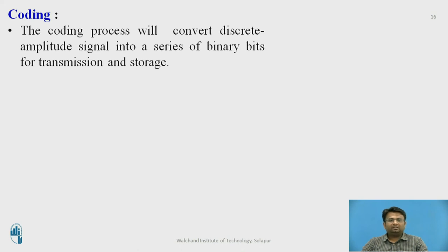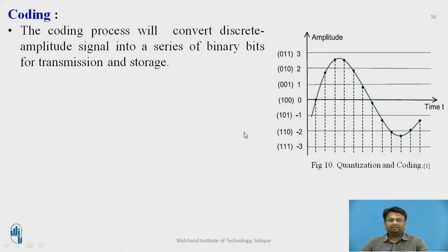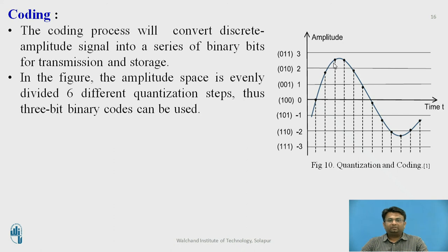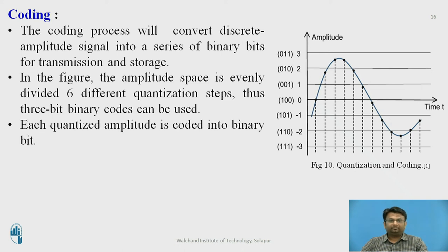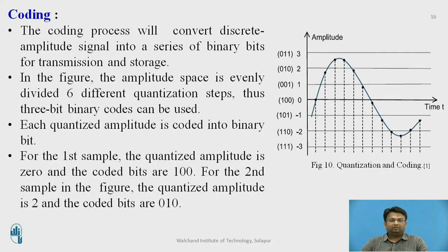The coding process converts the discrete amplitude signal into a series of binary bits for transmission and storage. From the diagram, this is the analog signal, and these points indicate the sampling instances. For each amplitude, we have one binary code. This amplitude can be rounded off to the nearby value of 2. The amplitude space is evenly divided into 6 quantum steps, so a 3-bit binary code can be used to code it. For the first sample, the quantized amplitude is 0 and the coded bits are 1, 0, 0. For the second sample, the quantized amplitude is 2 and the coded bits are 0, 1, 0.